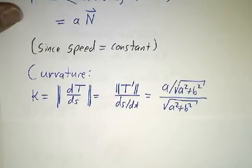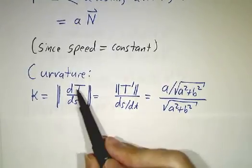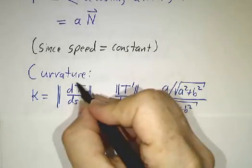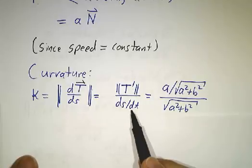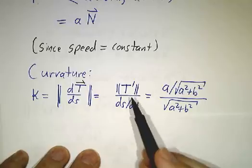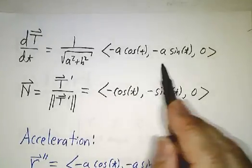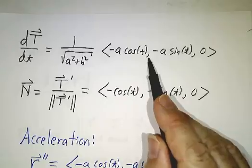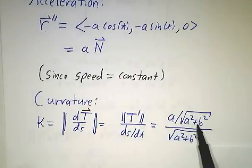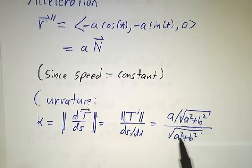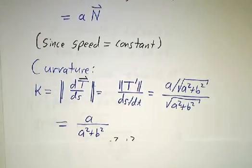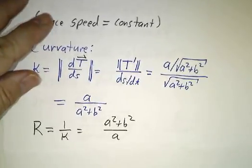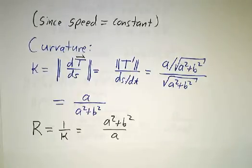Let's work out the curvature. The curvature is the rate at which the tangent vector is changing with respect to arc length, which equals the rate of change with respect to time divided by the speed. We worked out that rate of change with respect to time, and its length is a/√(a² + b²). The speed is √(a² + b²), so the curvature is a/(a² + b²). The radius of curvature is one over that: (a² + b²)/a.